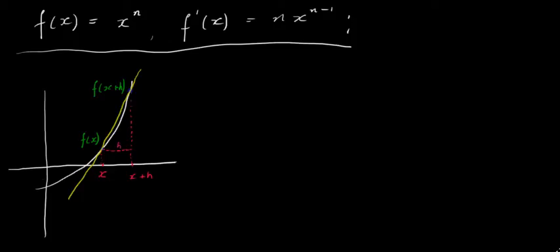In this video, I'm going to have a look at the basic rule for differentiation. So if we have a function f of x equal to x to the power of n, then f prime of x is equal to n times x to the power of n minus 1. So you basically bring the n down and reduce the power by 1.